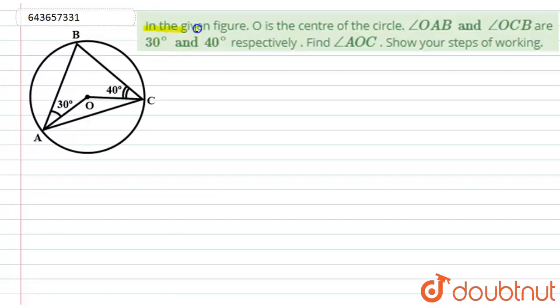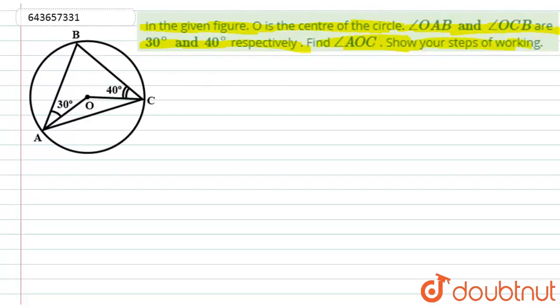Hello students, let's start with the question. In the figure, O is the center of the circle. Angle OAB and angle OCB are 30 degrees and 40 degrees respectively. Find the angle AOC, showing your steps of working.